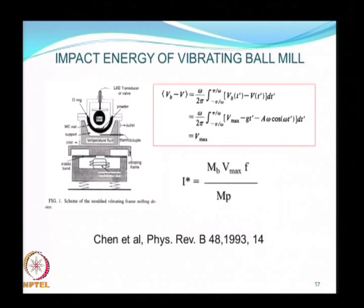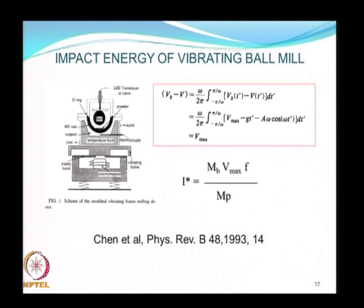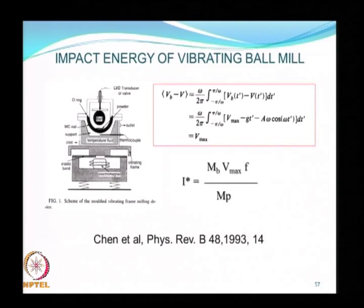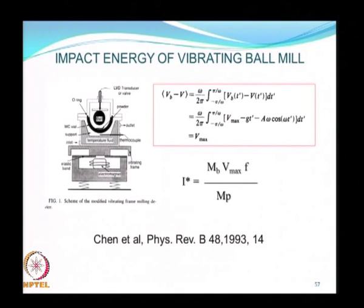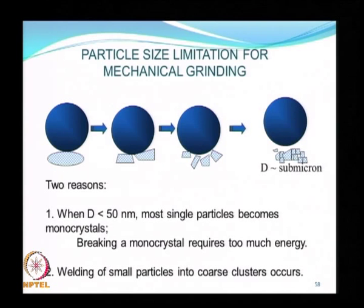The impact energy of a vibrating ball mill can be calculated based on operating conditions, in particular the frequency. The vibrating ball mill is an alternative to the impact ball mill where balls drop by gravity, and is another method for making fine particles from coarser feed. However, vibrating ball mills are not widely used in industry compared to the impact-based ball mills that are more conventionally used.